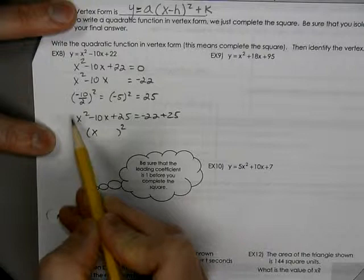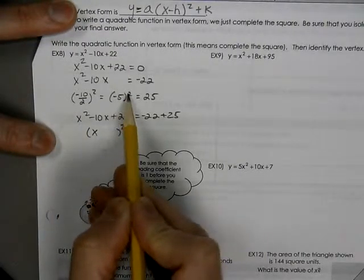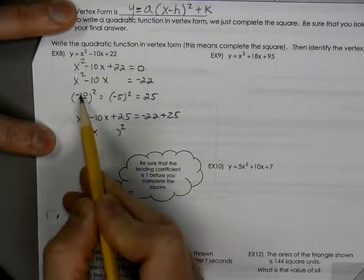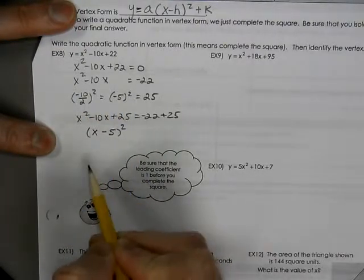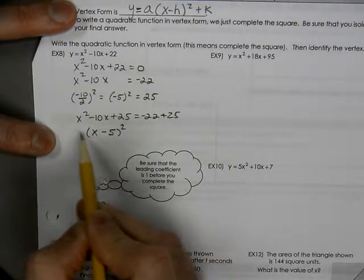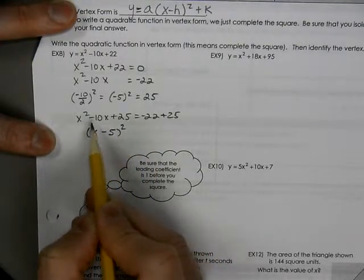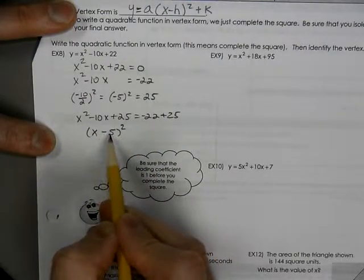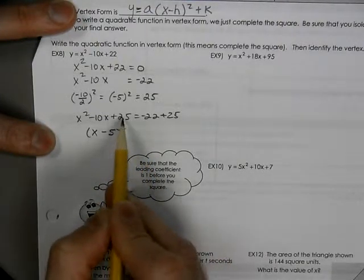The leading coefficient, remember, has to be 1. The value up here that you're going to square, your b divided by 2, is always the number that will go in here. If you think this out the long way, x times x makes x squared, x and a negative 5, negative 5 and an x would make negative 10x, and negative 5 and a negative 5, if you were to foil this all together, would become 25.